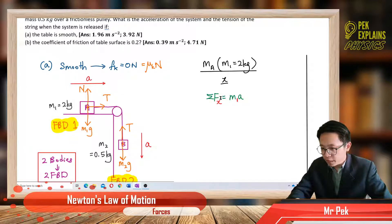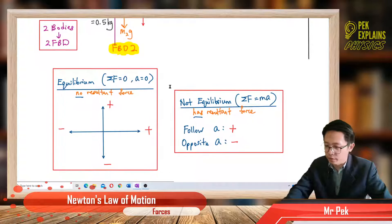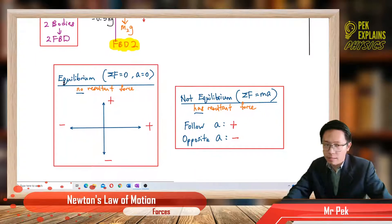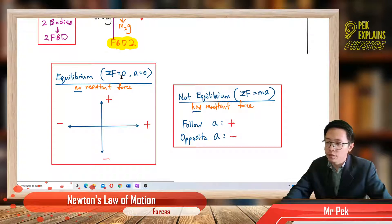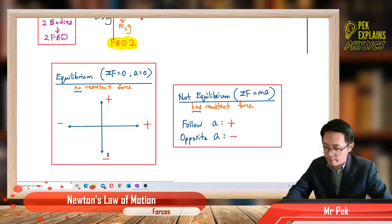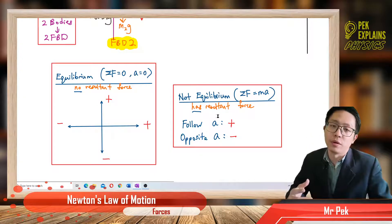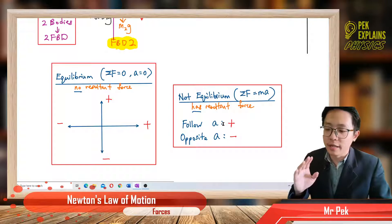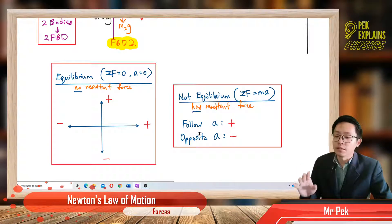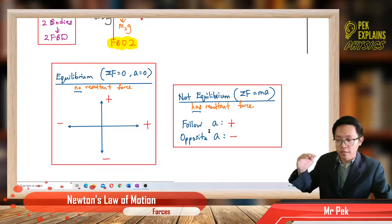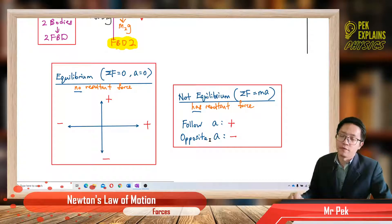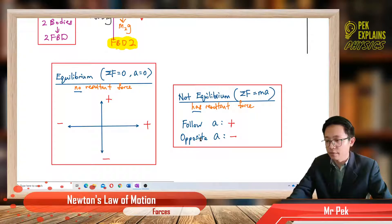Sign convention is very important. When in equilibrium, total force is 0 — no acceleration, no resultant force. Going right is positive, going left is negative, going up is positive, going down is negative. But when we have acceleration, total F = M1·A, meaning there is a resultant force. Then the sign convention follows acceleration: follow acceleration is positive, opposite acceleration is negative.